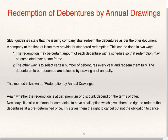Redemption of debentures by annual drawings. SEBI guidelines state that the issuing company shall redeem the debentures as per the offer document. The offer document is a prospectus or statement in lieu of prospectus. As per SEBI guidelines, redemption can be as per the offer document. The company at the time of issue may provide staggered redemption.